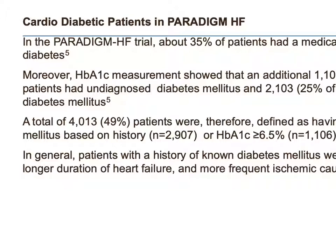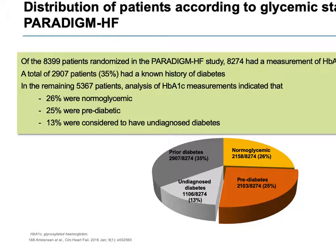In the Paradigm HF study, almost one third of the enrolled patients had diabetes. When HbA1c — glycosylated hemoglobin — was assessed, many patients did not have good glycemic control. In absolute numbers, nearly four thousand patients had diabetes based on their history alone. These patients were older, more fragile, and had multiple comorbid conditions.